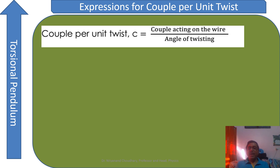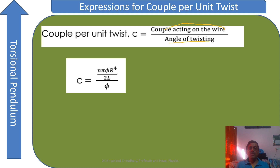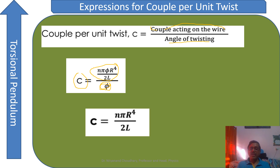The couple per unit twist C is defined as the couple acting on the wire divided by the angle of twist phi. The couple acting on the wire is the total moment of the force, which equals ηπφR⁴/2L. Dividing by φ cancels phi, giving us C = ηπR⁴/2L. This is the couple per unit twist for a cylinder.